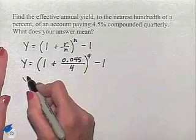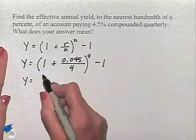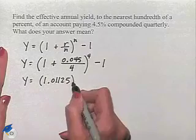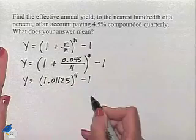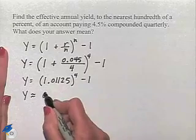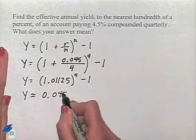And then we can simplify this by evaluating inside the parentheses. We have 1.01125. We'll be raising that to the fourth power and subtracting 1. Our Y value is approximately equal to 0.0458.